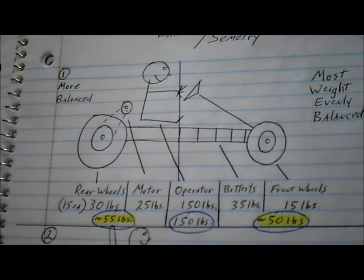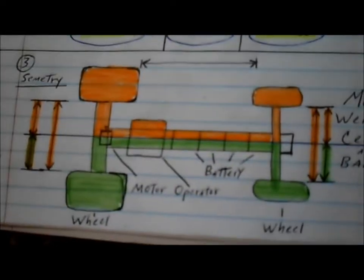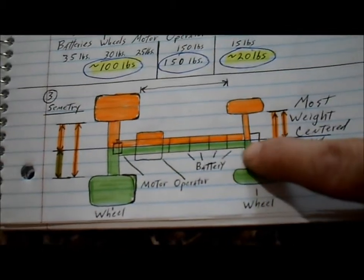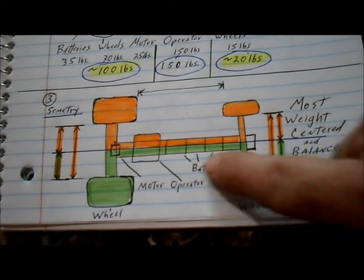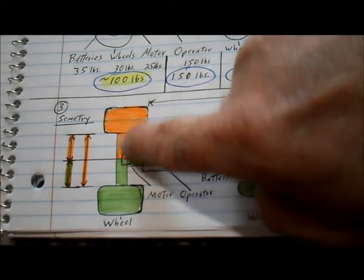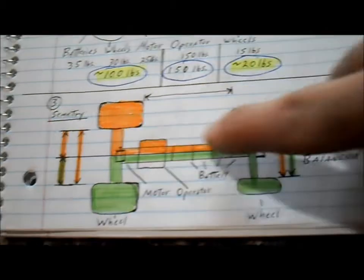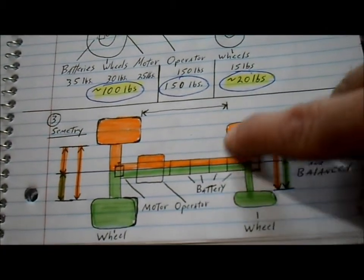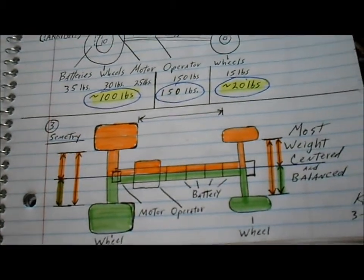Then going back to our backbone concept idea, we got it from a top view. Our batteries will be inside the backbone. The operator will be centered over the backbone. You have your rear axle housing or rear axle and then your front axle, and then we may need to do some bracing depending on what type of materials we use.